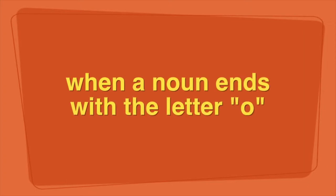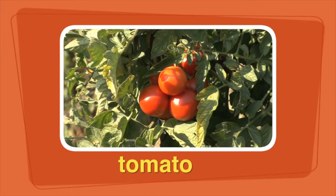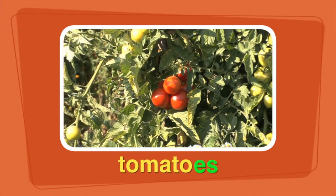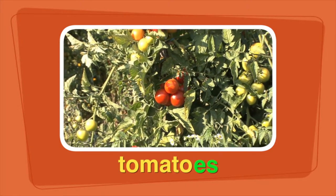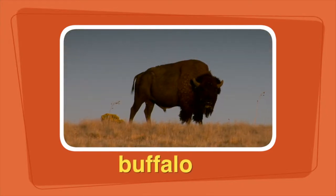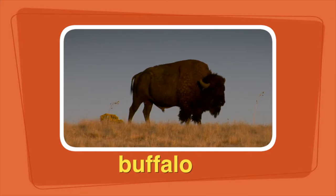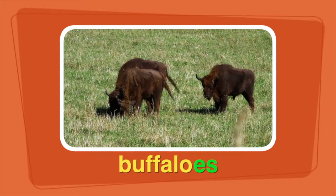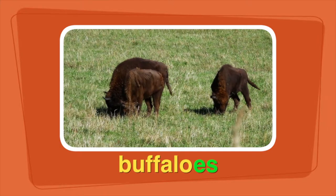Many words end with the letter O. To make some of them plural, you need to add ES. The plural of tomato is tomatoes. The tomatoes grow on the vine. The word buffalo ends with the letter O. To make the word buffalo plural, you need to add ES. The buffaloes grazed on the grass.